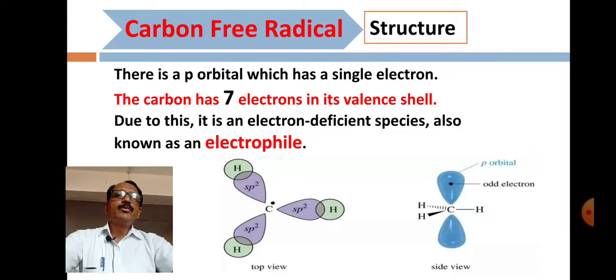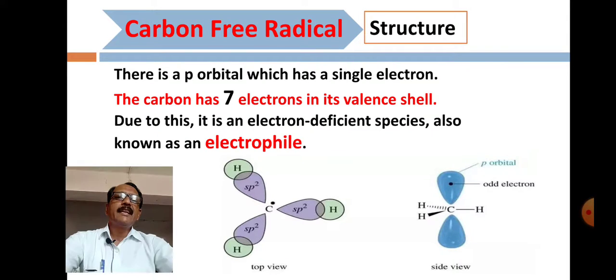Due to having only seven valence electrons, carbon free radical is an electron-deficient species, also known as an electrophile.